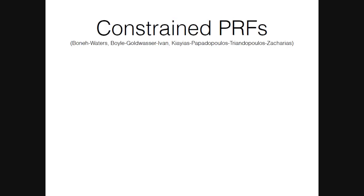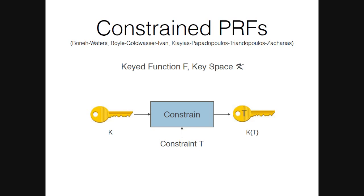In 2013, three groups — Bonet et al., Boyle et al., and Keyes et al. — proposed a powerful extension called constrained PRFs. In constrained PRFs we have a keyed function f and a key space, and we also have a constrained algorithm. The constrained algorithm takes as input PRF key k and a constraint t, and it outputs a constrained key kt.